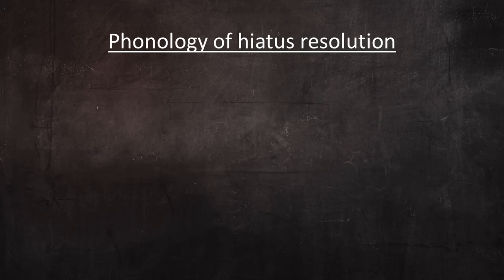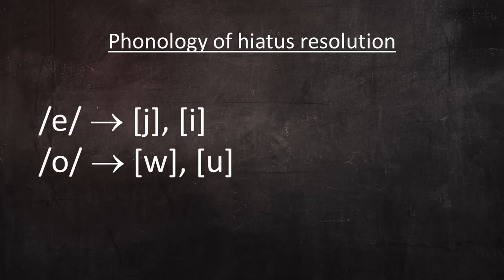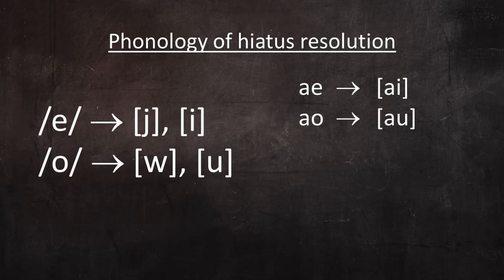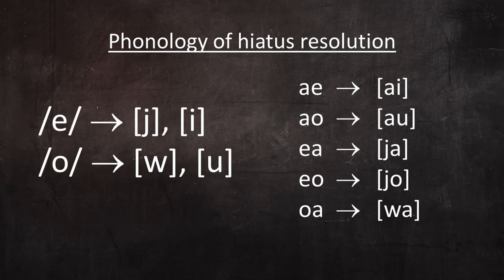The phonology of hiatus resolution is well within the scope of a video like this one. What does it look like when a hiatus resolves to a diphthong? In each case, the E transforms into an I, or the O transforms into a U, and the two vowels are pronounced as a single syllable following the rules outlined in my video on diphthongs. So A-E becomes AI, A-O becomes AU, E-A becomes YA, E-O becomes YO, O-A becomes WA, and O-E becomes WE.